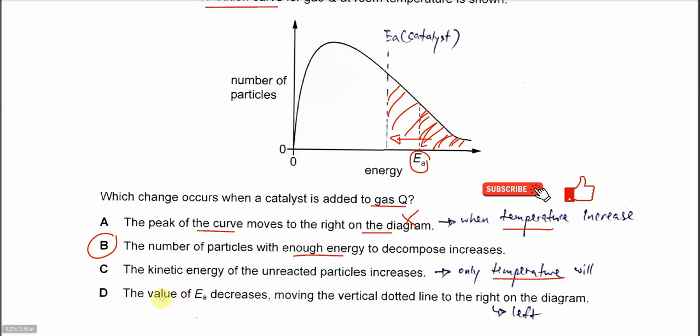For D, the value of EA decreases moving the vertical dotted line to the right. No, it's to the left as I told you just now. That's why this one is also wrong. The answer confirmed is B. That's all, thank you.